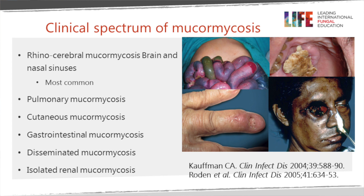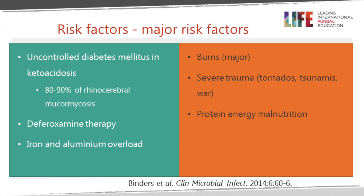The major risk factors are uncontrolled diabetes, usually with ketoacidosis, particularly associated with the rhinocerebral form. Iron chelating therapy - deferioxamine - is also associated, particularly with disseminated disease. Iron chelation seems to feed the fungus and allow it to grow, associated with iron and aluminium overload, so patients with thalassemia or renal failure are particularly at risk.